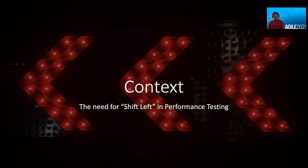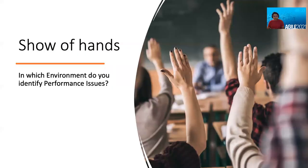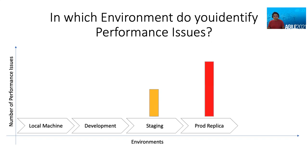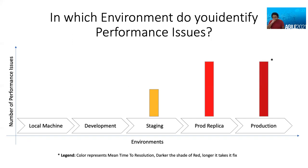Before we jump into the topic, let's understand the context. Why do we need to shift left in performance testing? Let's do a quick show of hands. In which environment do you identify most of your performance issues? It's not quite likely that you'll identify many on local machine and even possibly on development environments. Now why do we end up in this condition?